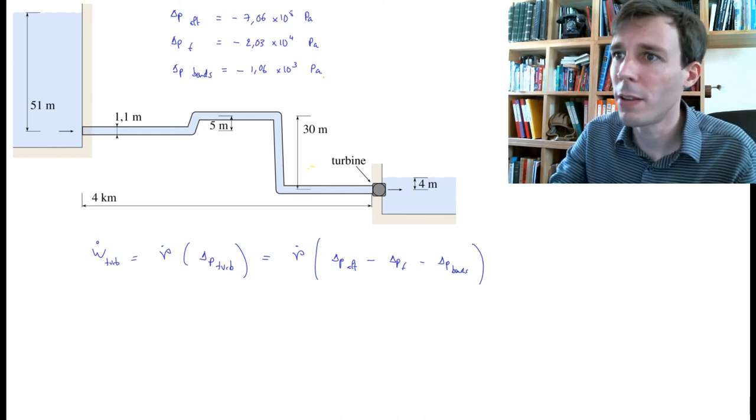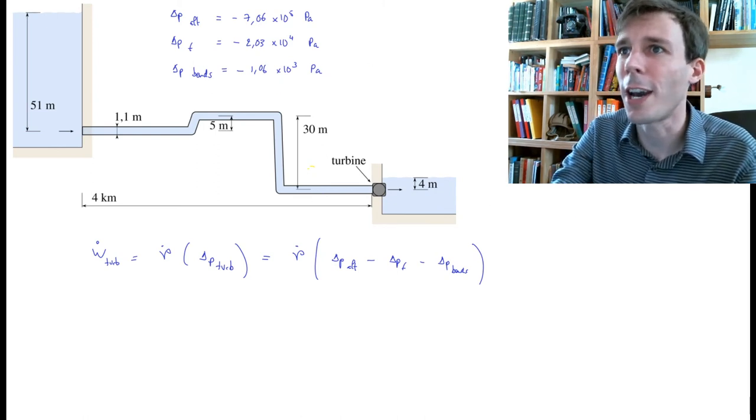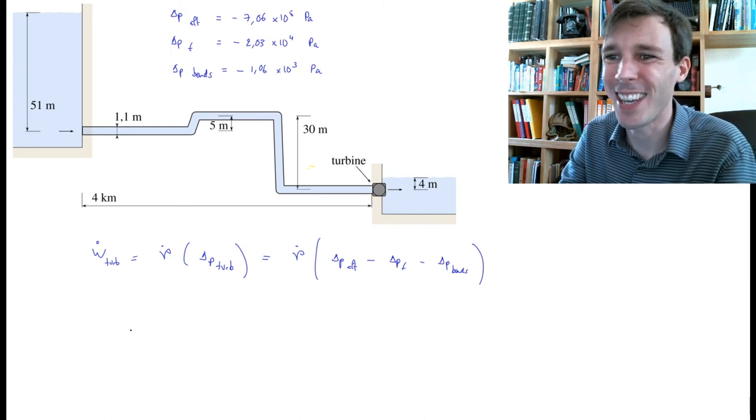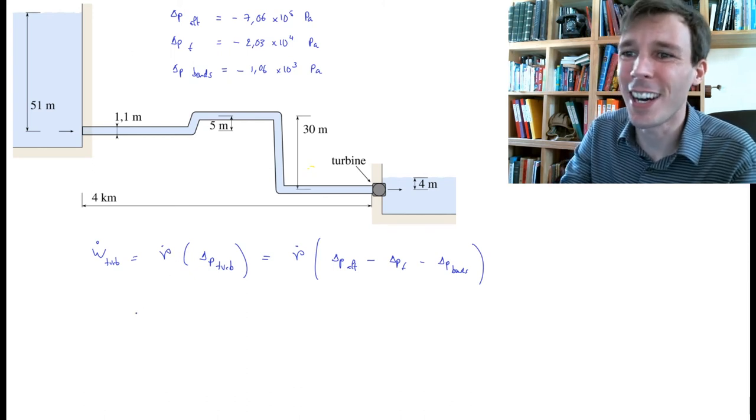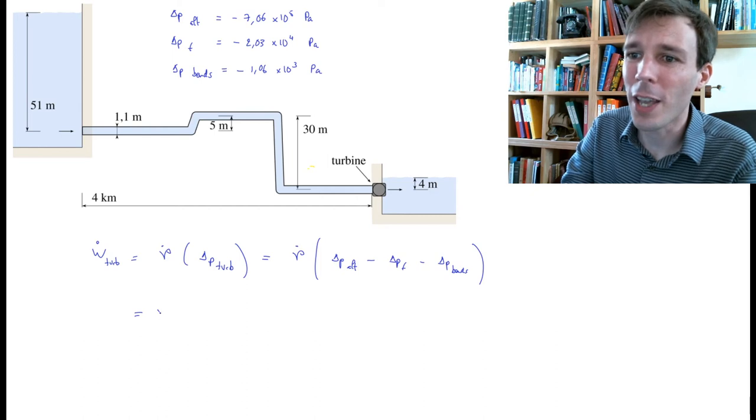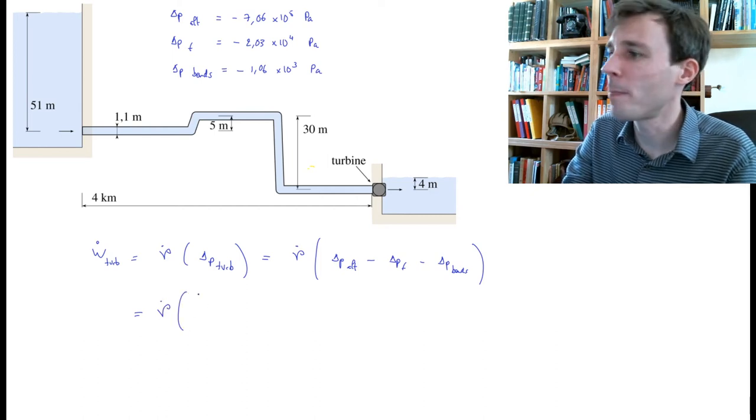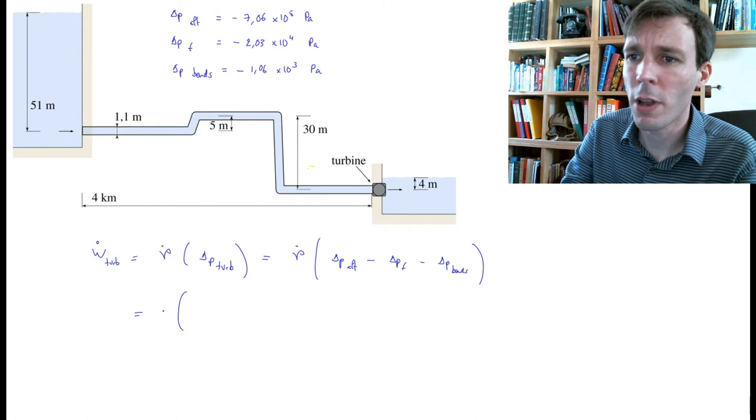So let's put this into a final result. We have the volume flow multiplied by... let me write the volume flow as a number. The volume flow is 800 liters per second, and this turns out to be 0.8 meters cubed per second.